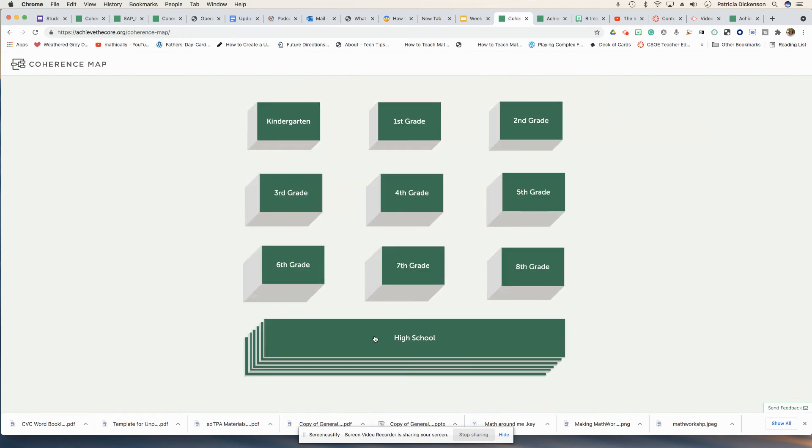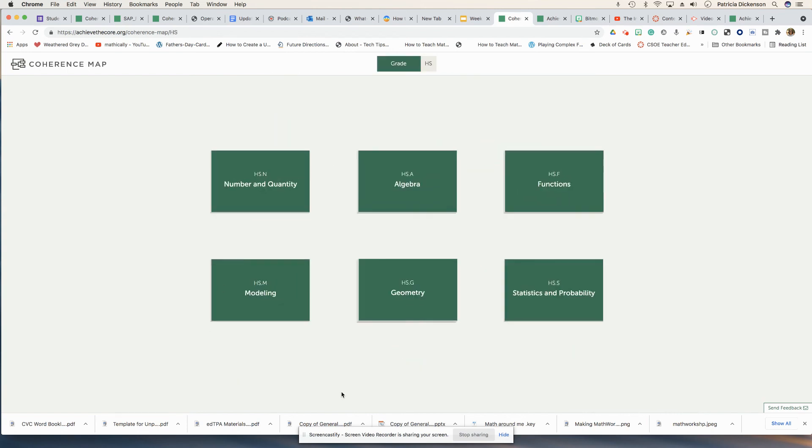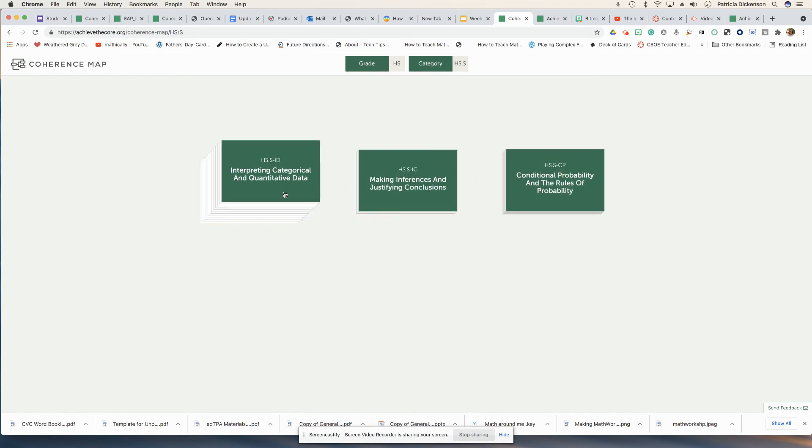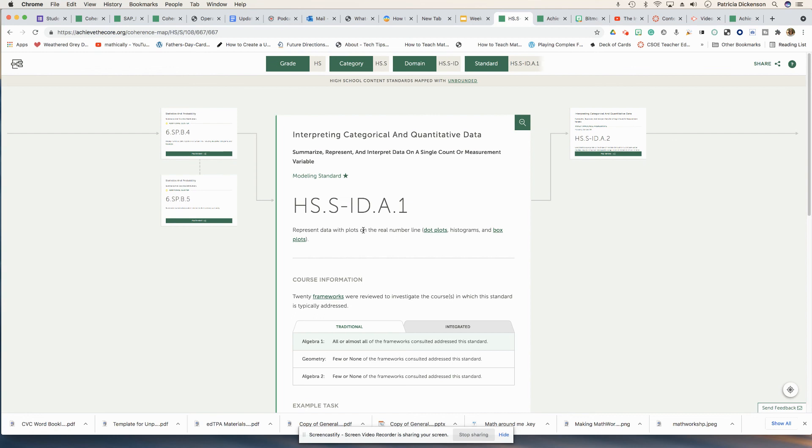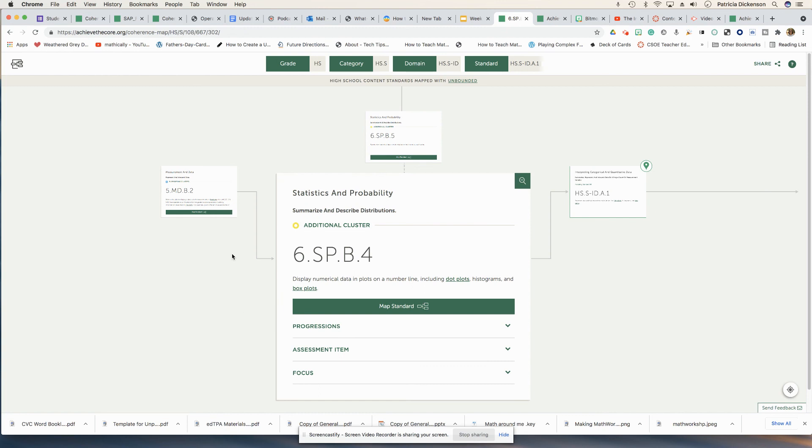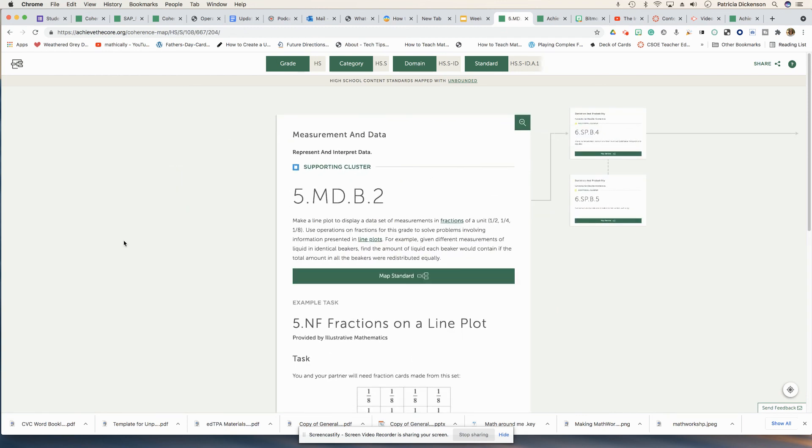Certainly you can look even at high school and backwards map those high school standards and see what prior knowledge should students know within this particular domain. Looking at this cluster here, I'm going to map this standard of representing data with plots and I'll be able to look backwards and see that this particular modeling standard was built on knowledge that they learned in sixth grade. And then again, we can backwards map that to elementary school. So wonderful tool.